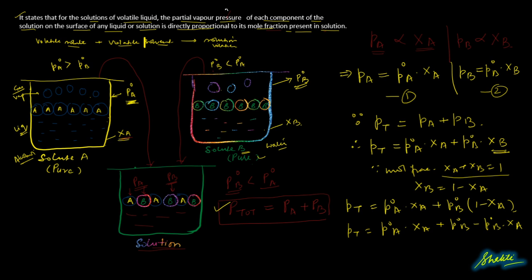Substituting xB = (1 − xA): P_total = P0A · xA + P0B · (1 − xA), which simplifies to P_total = P0B + xA(P0A − P0B). This is the final equation and mathematical expression of Raoult's Law.